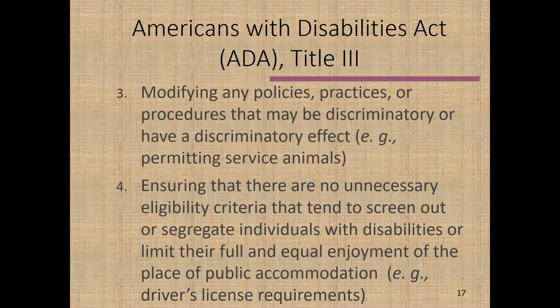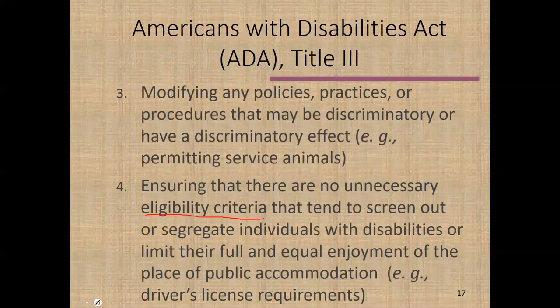Fourth, you want to make sure you aren't using eligibility criteria that limit a particular population. For example, if someone is blind they won't have a driver's license. If you require a driver's license to access a service, that person could be perfectly capable of using that service but unable to meet the requirement. You would need to provide a different type of credential — perhaps a passport or a state-issued photo ID for non-drivers — that would allow them to participate.